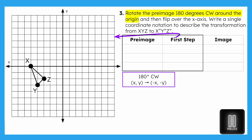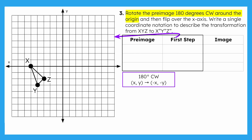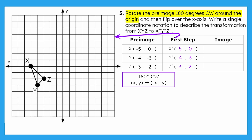The pre-image consists of points X, Y, and Z, and after a 180-degree rotation, X, Y, Z prime will have these coordinates. Take a moment to ensure your coordinates match what's on the screen. And here is X, Y, Z prime.